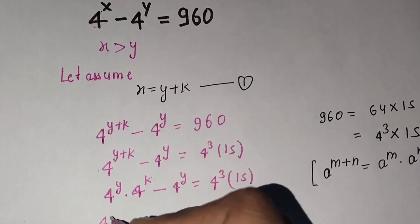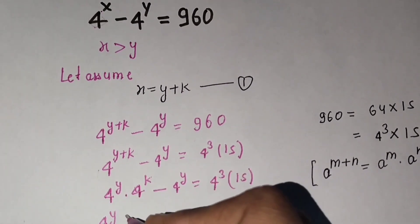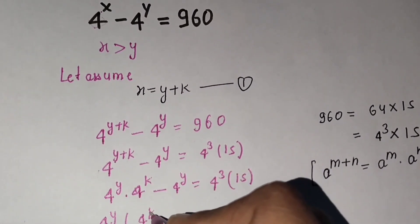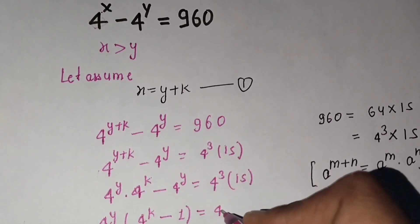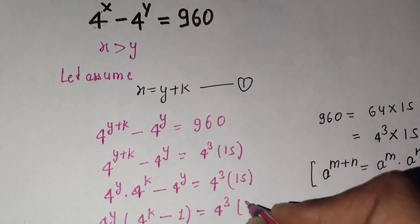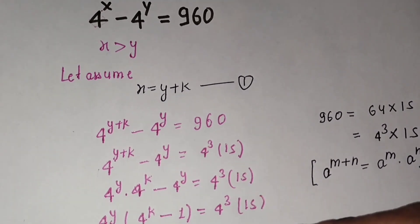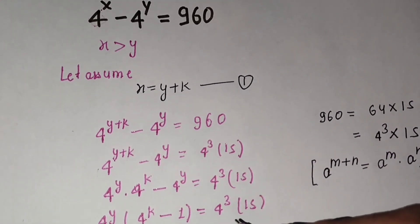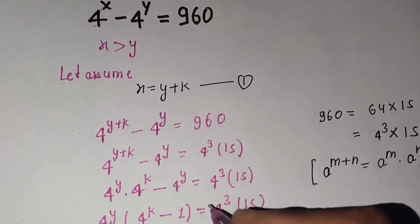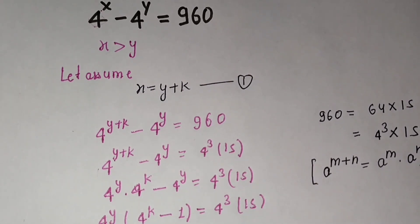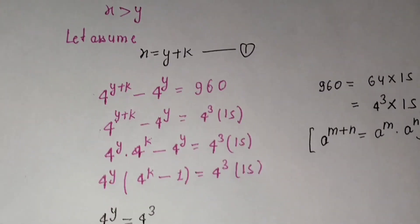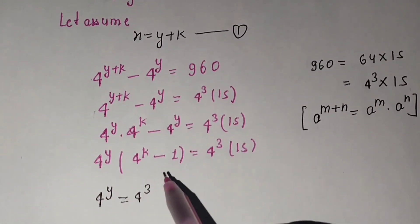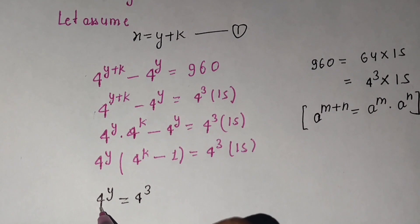We have 4^y times 4^k minus 4^y equals 4^3 times 15. Factoring out 4^y on the left side: 4^y times (4^k minus 1) equals 4^3 times 15. Now clearly the terms can be equated: 4 raised to power y equals 4 raised to power 3.